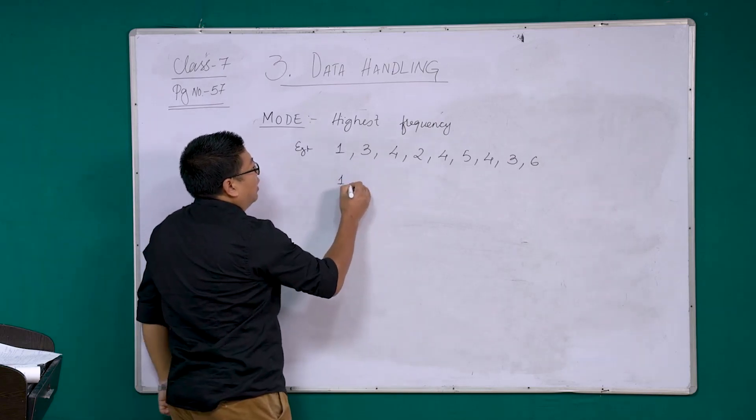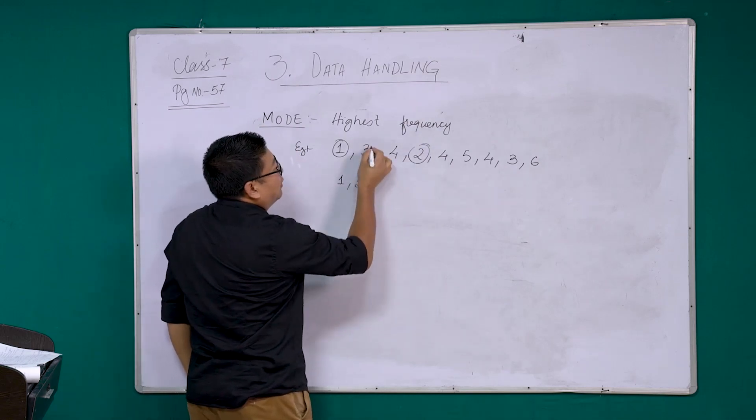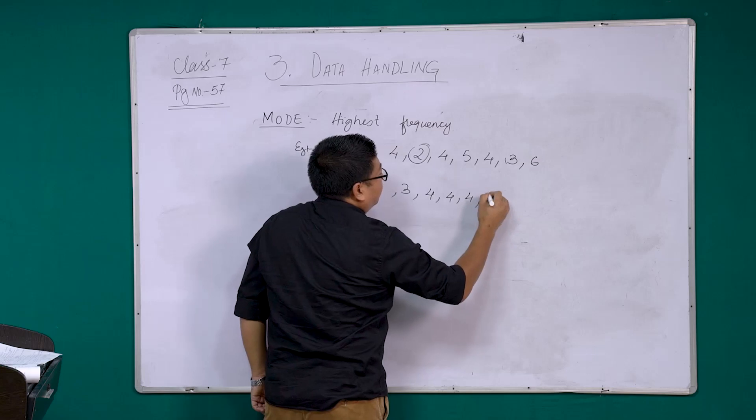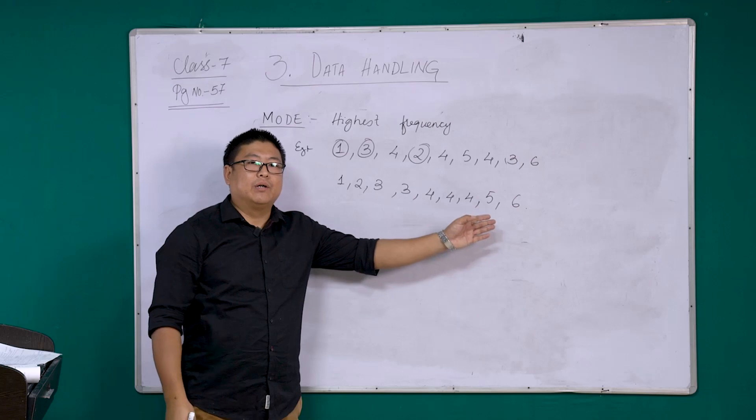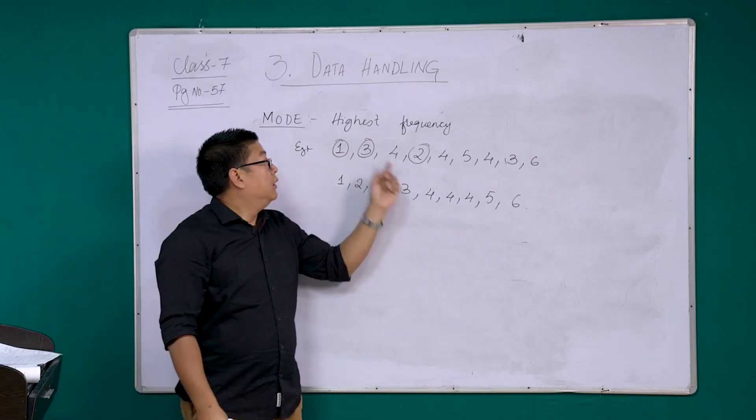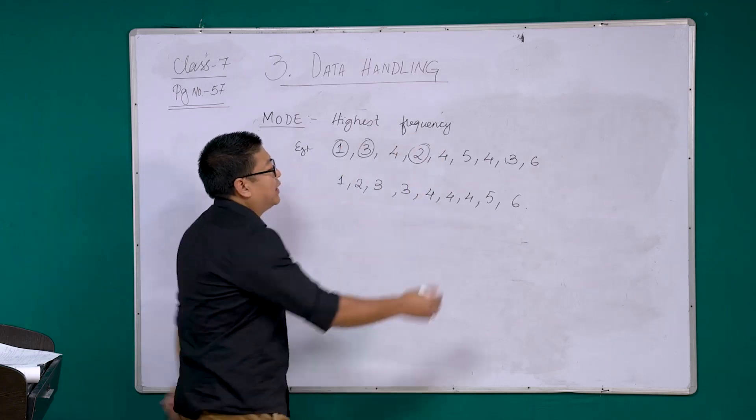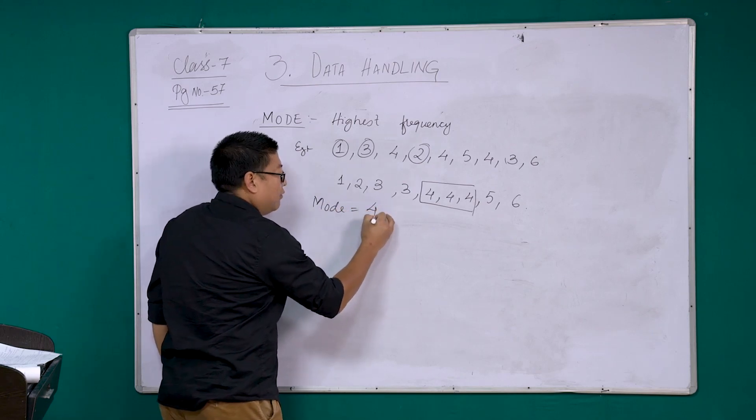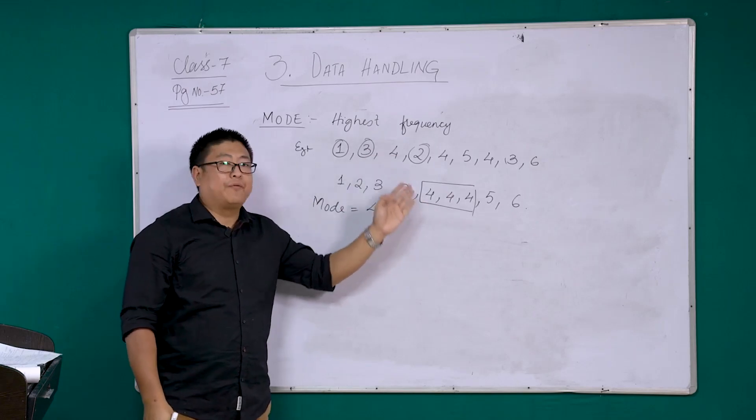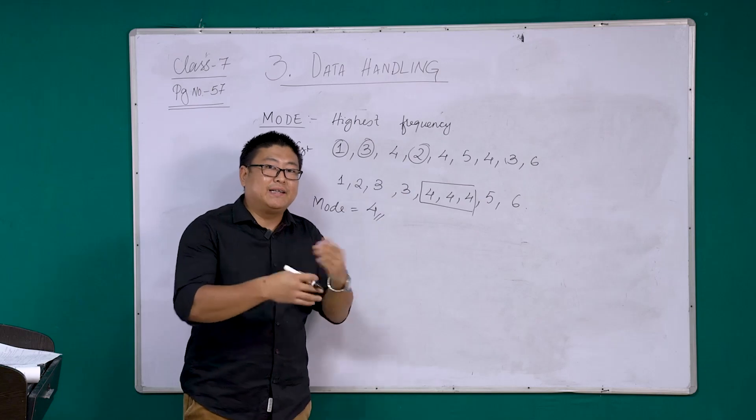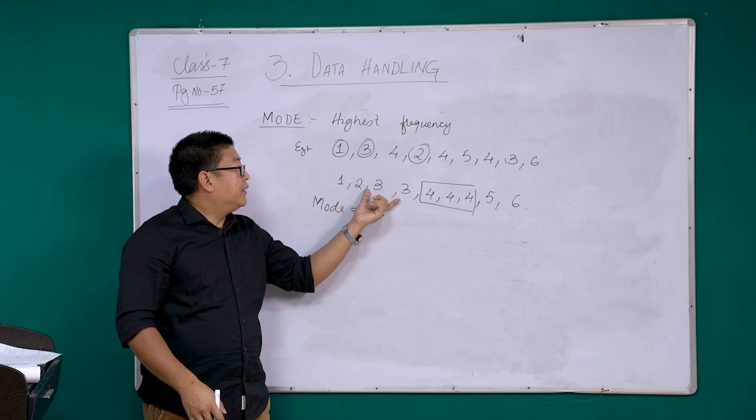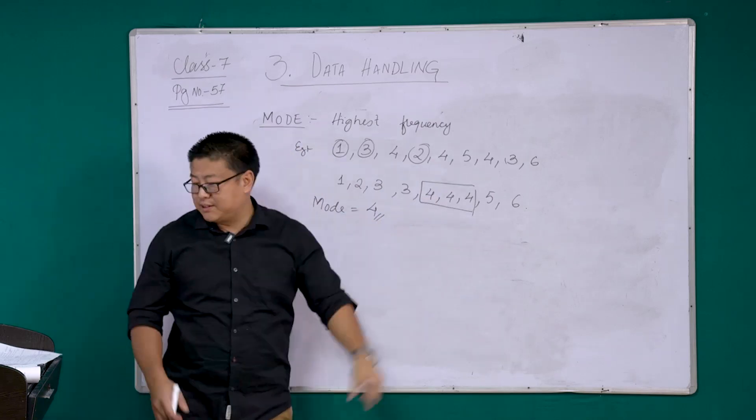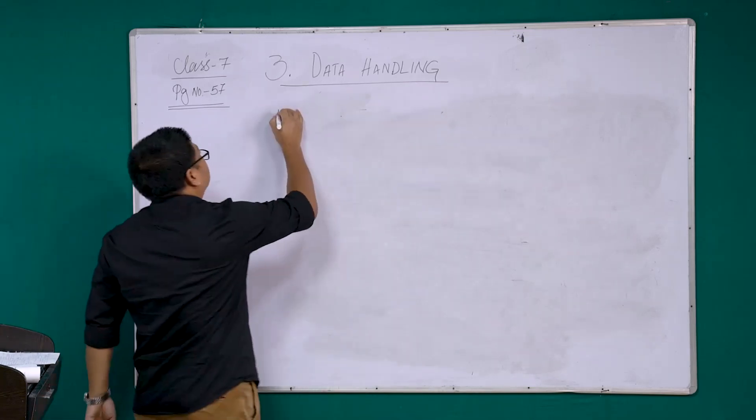So, we will arrange them in ascending order. 1, then 2, then 3, 3, then 4, 4, 4, then 5, then 6. Now, after we have arranged them in ascending order, we can easily find mode. Mode is the highest frequency. We have to find the highest frequency. So, by looking at this data, we can see that 4 is repeating 3 times. So, your mode is nothing but 4. I hope this is clear. The highest number of frequency, that means highest number of repeating data. So here, we see that 4 is repeating 3 times, the others, 3 is repeating 2 times, but since 4 is repeating 3 times, your mode will be 4.